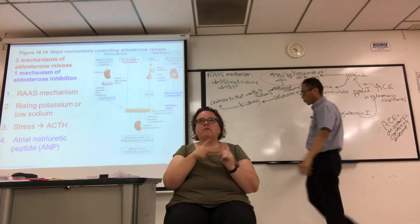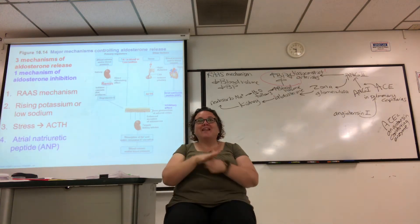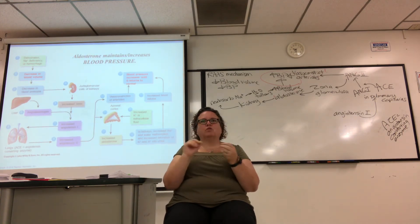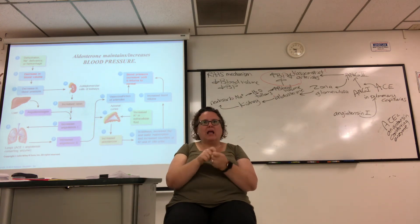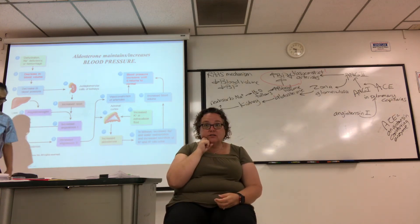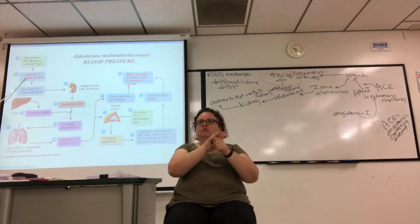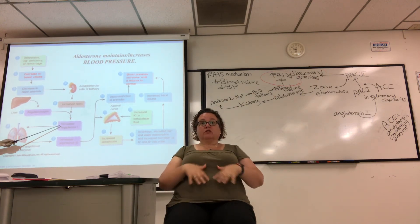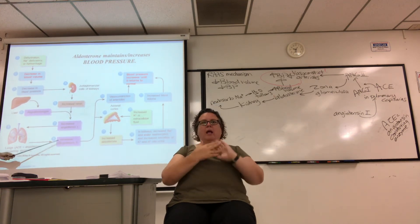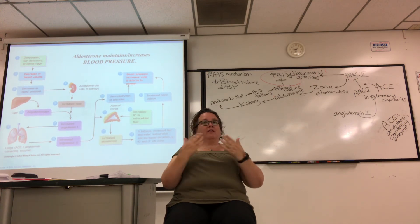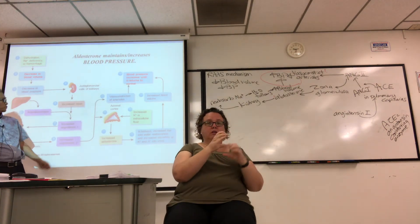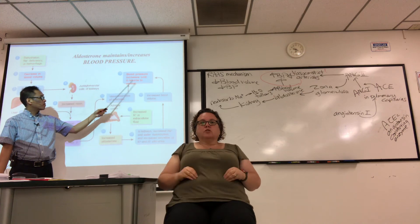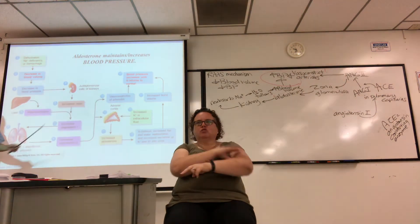To recap the RAAS cascade: dehydration → decreased volume and pressure → kidney secretes renin → liver secretes angiotensinogen → renin cleaves it to angiotensin I → in the lungs, ACE converts it to angiotensin II → two effects: vasoconstriction and aldosterone release from the adrenal cortex → kidneys increase water reabsorption → increased blood volume and blood pressure. I included a slide with all these steps numbered if your notes are a mess.